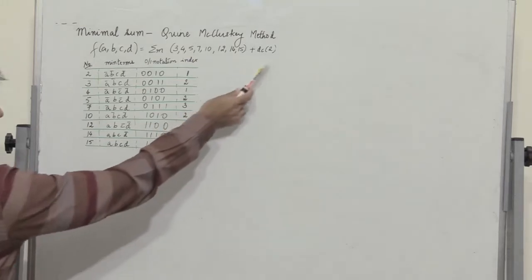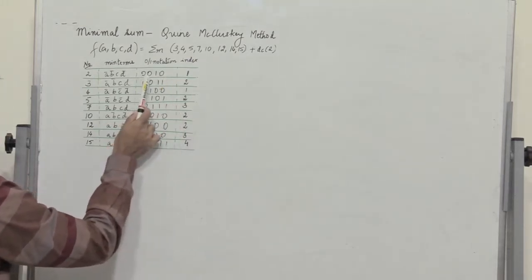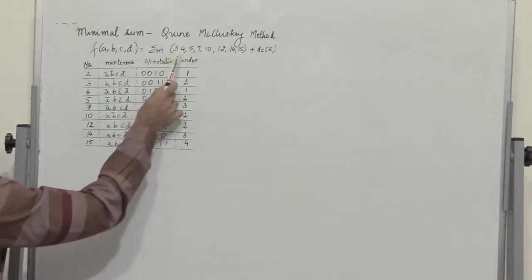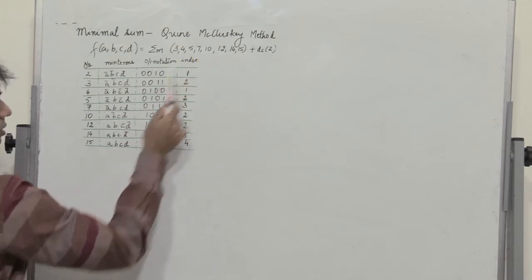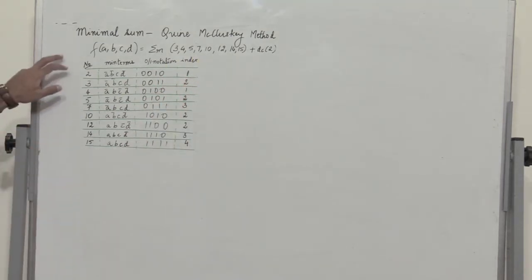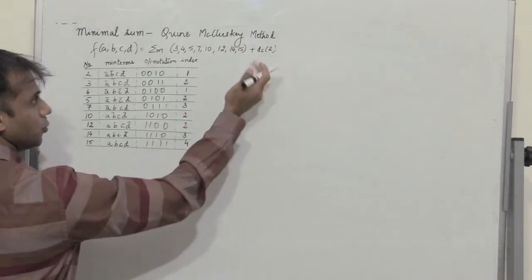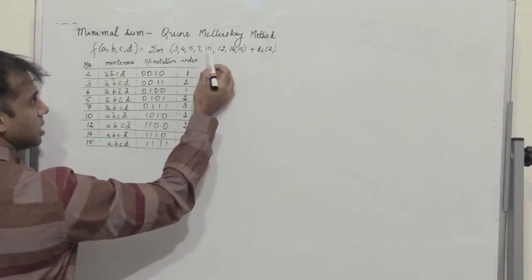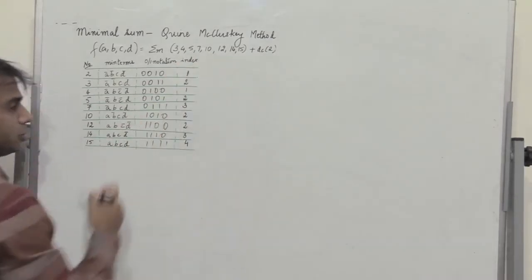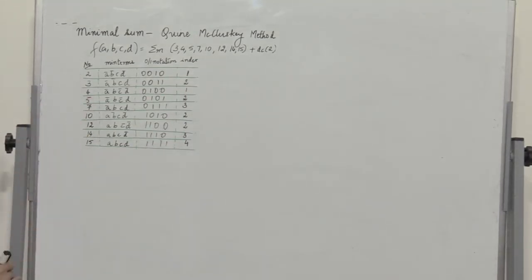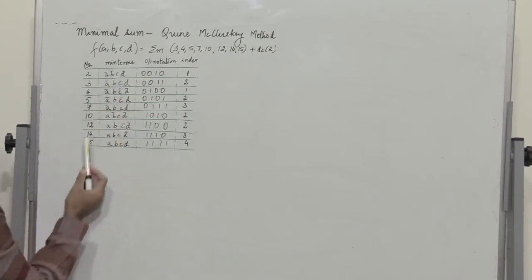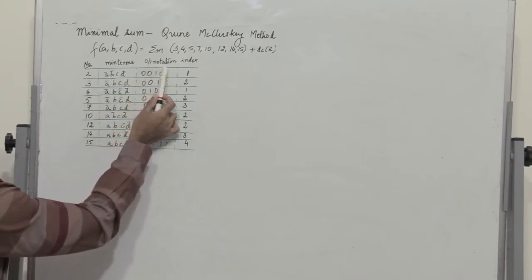We consider the don't care which is 0010, and then 3, 4, 5, 7, 10, 12, 14, 15. So the function F has an output 1 for 2, 3, 4, 5, 7 and so on up to 14. I have written the decimal numbers here, and then the corresponding minterm and the 1,0 notation. So for 2 it is 0010, and the minterm would be A bar, B bar, C, D bar. If I have a 0, a bar is included; if there is a 1, we just write the variable as it is. We also write the index.